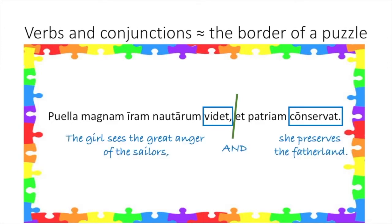The girl sees the great anger of the sailors, and she preserves the fatherland. Because the girl sees the great anger of the sailors as one independent clause, and she preserves the fatherland as a second independent clause, we know to keep them separate.